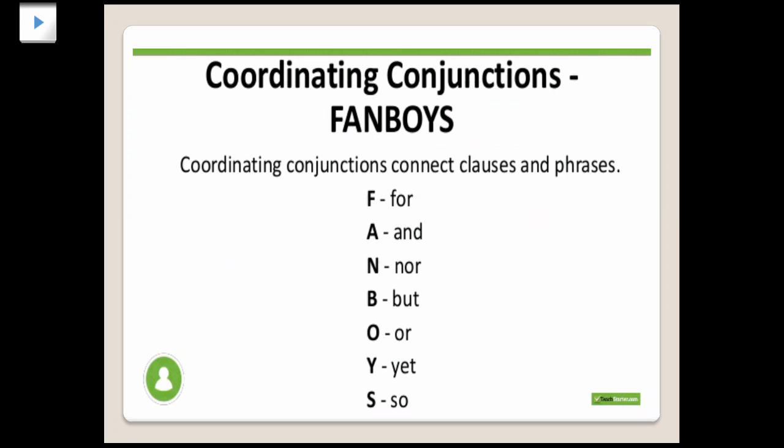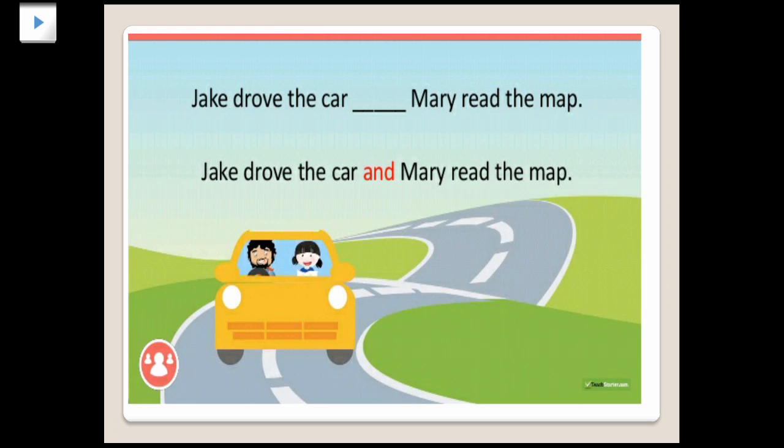These are the coordinating conjunctions — FANBOYS: For, And, Nor, But, Or, Yet, So. In a compound sentence, two independent clauses are combined using any of these coordinating conjunctions. Here is another example: 'Jake dropped the car and Mary read the map.'